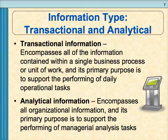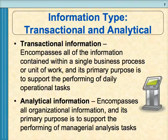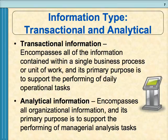There are different types of information. A lot of what's generated across the organization is transactional information — information about single business processes. For example, keeping track of raw materials coming into manufacturing, unfinished goods moving through the process, finished goods traveling to retail stores and customers. Actual sales and daily operational tasks all create transactional information.